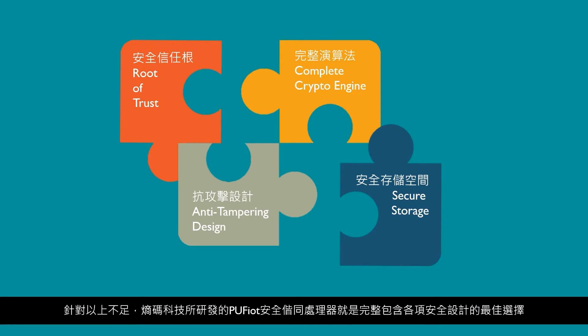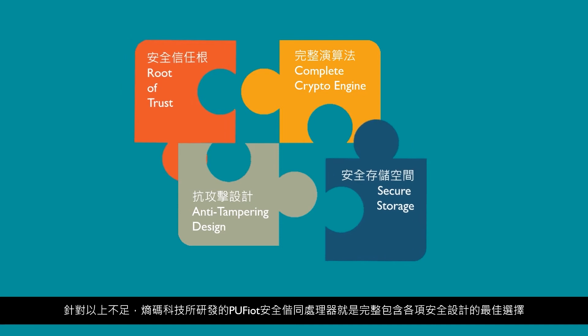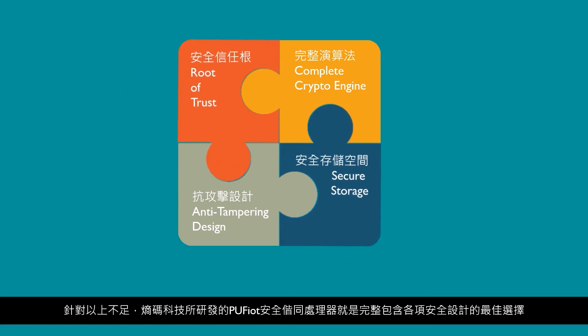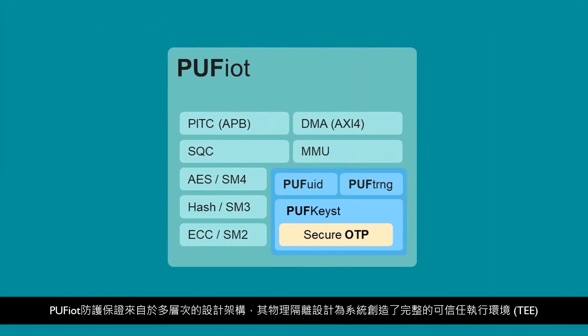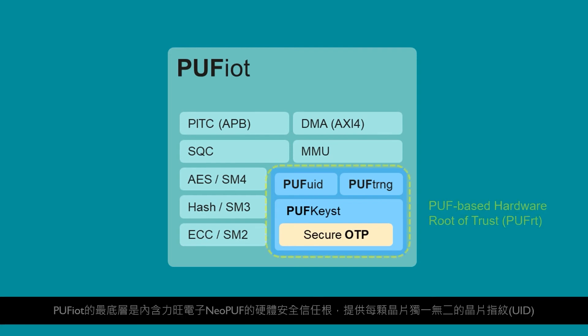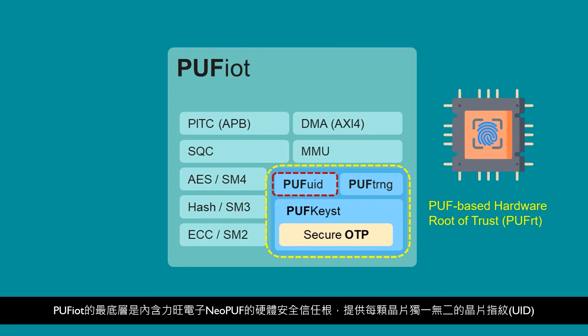To address the absence of a complete secure coprocessor in the RISC-V ecosystem, Puff Security's integrated solution IP, Puff IoT, is the answer. Puff IoT's secure boundary is based on physical separation of hardware, therefore establishing a sound trusted execution environment. Puff IoT's hardware root of trust also encompasses eMemory's patented NeoPuff, providing each chip with a unique chip fingerprint.